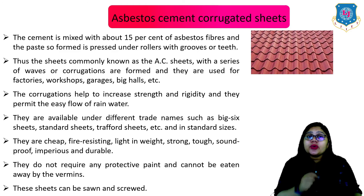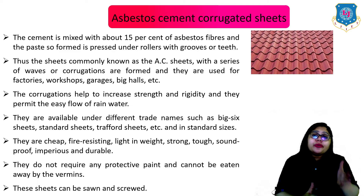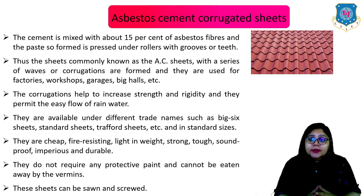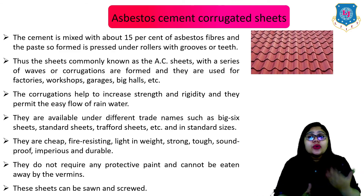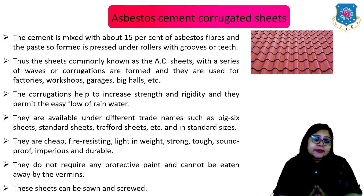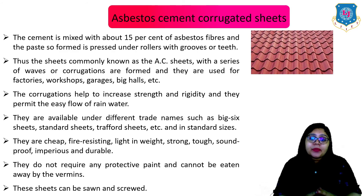Now let us understand the asbestos cement corrugated sheets. Cement is mixed with about 15 percent of asbestos fibers and the paste so formed is pressed under rollers with grooves or teeth. These sheets, commonly known as AC sheets, have a series of waves or corrugations and are used for factories, workshops, garages, big halls, etc. The corrugations help to increase strength and rigidity and permit easy flow of rainwater. They are available under different trade names such as big six sheets, standard sheets, and preferred sheets, in standard sizes. They are cheap, fire-resisting, lightweight, strong, tough, soundproof, impervious, and durable. They do not require any protective paint and cannot be eaten away by vermin.